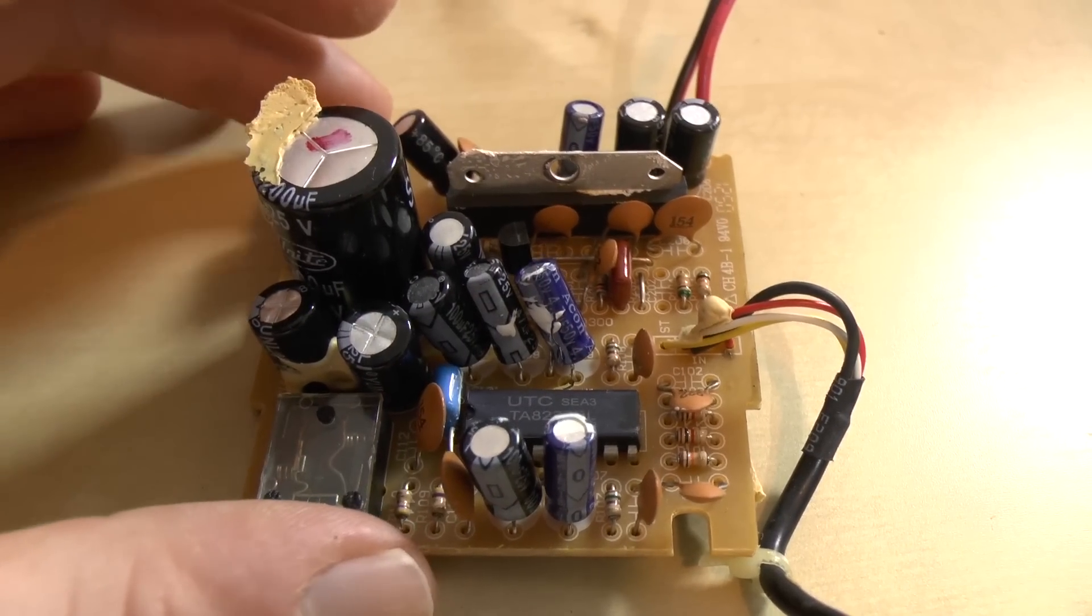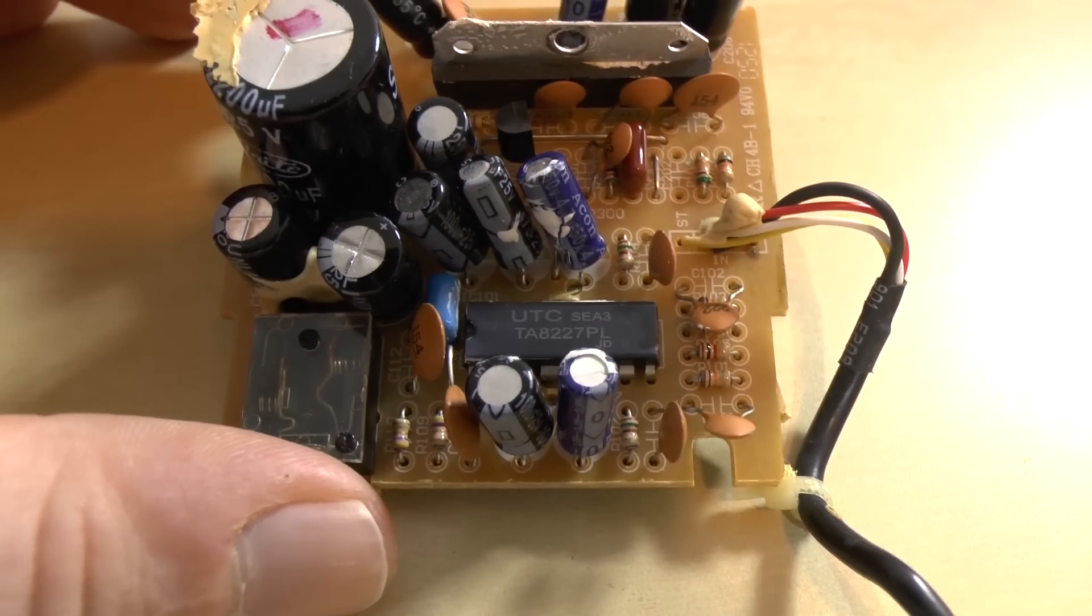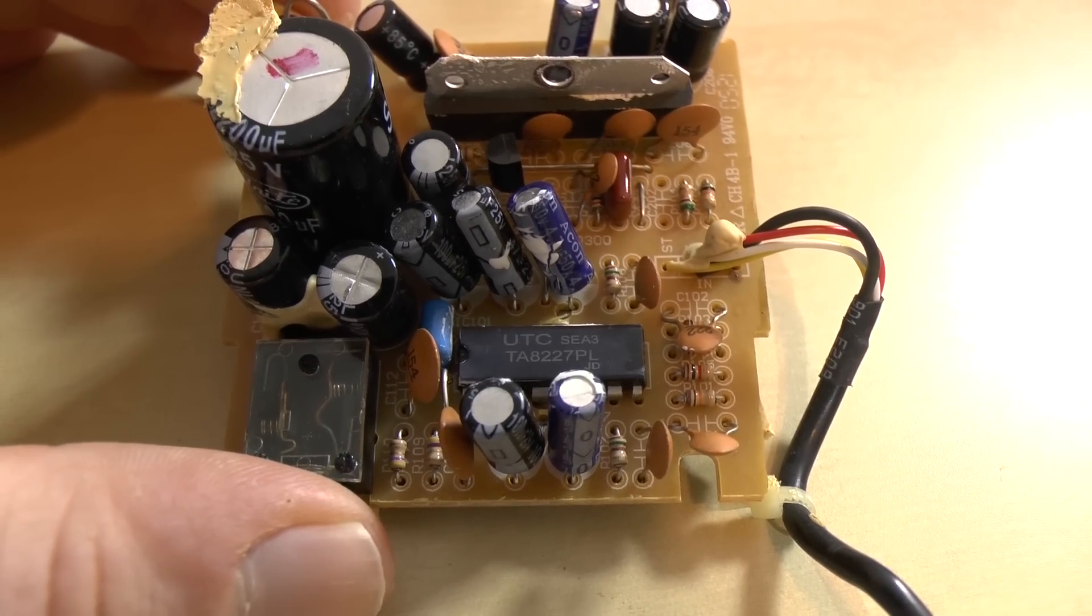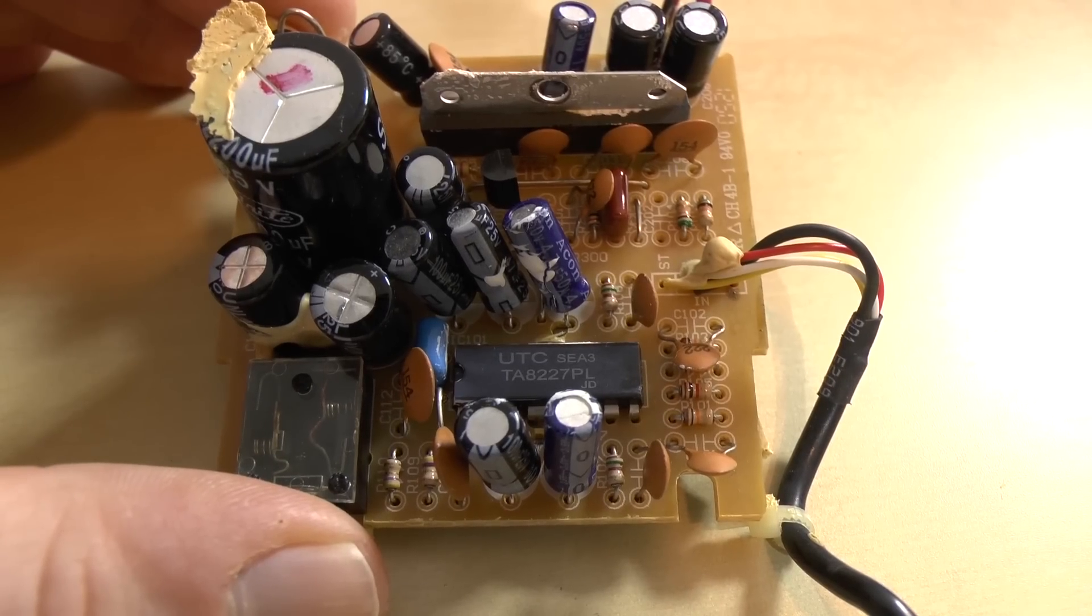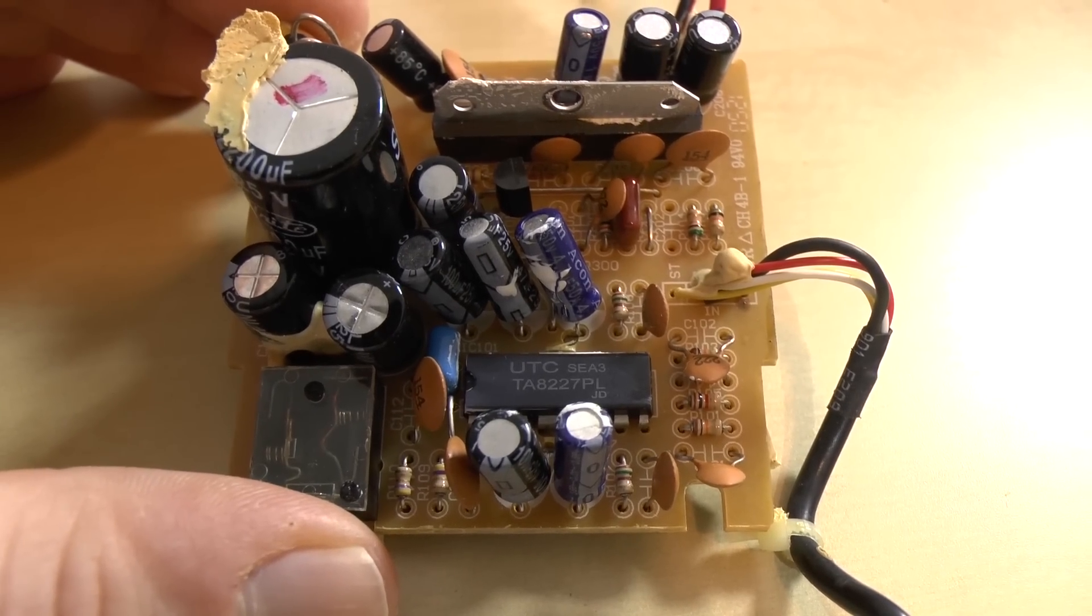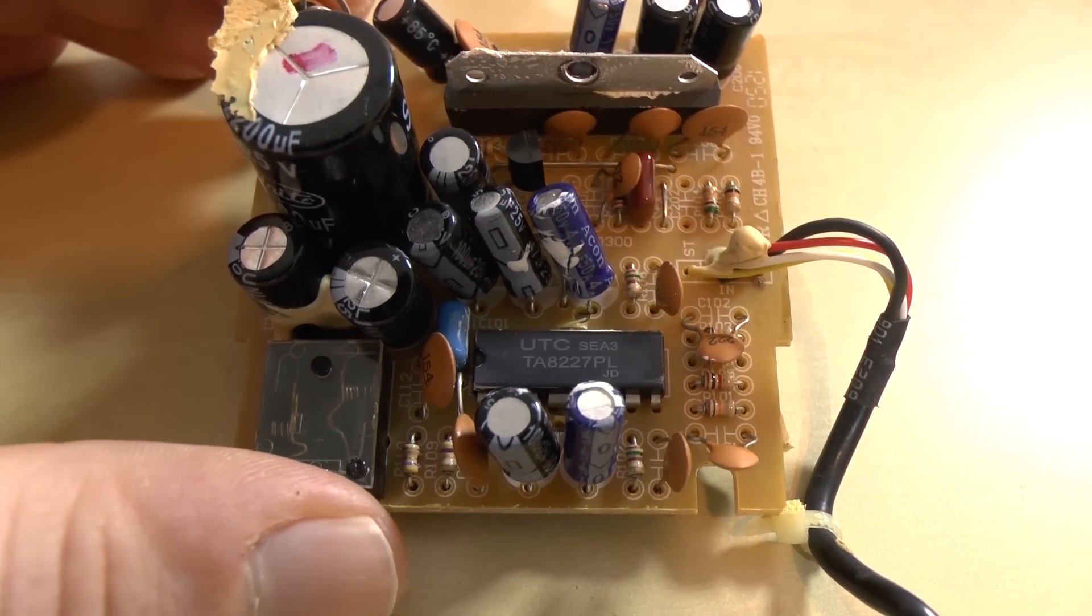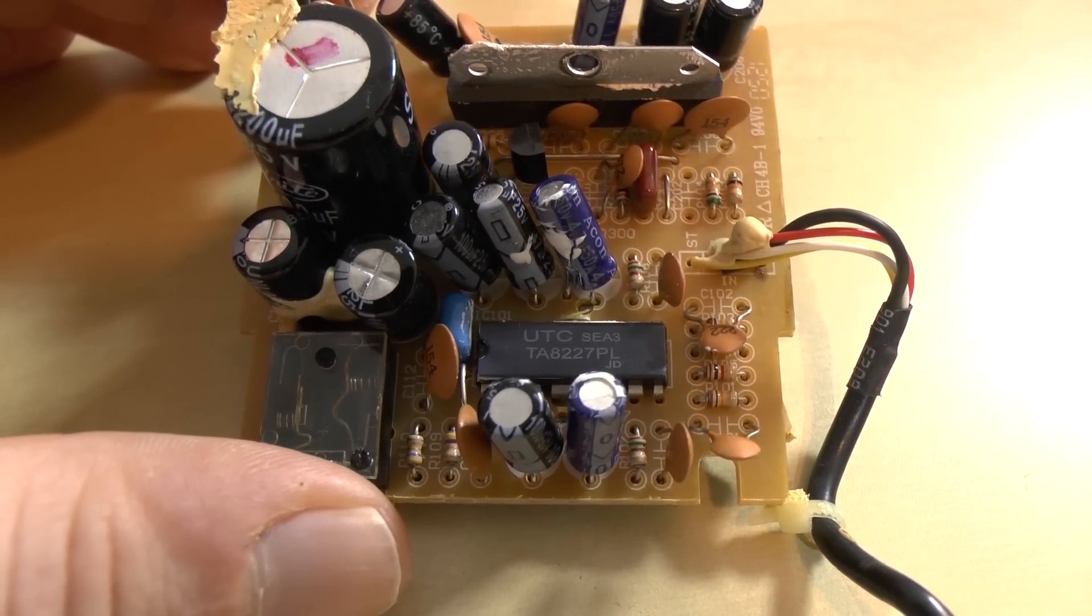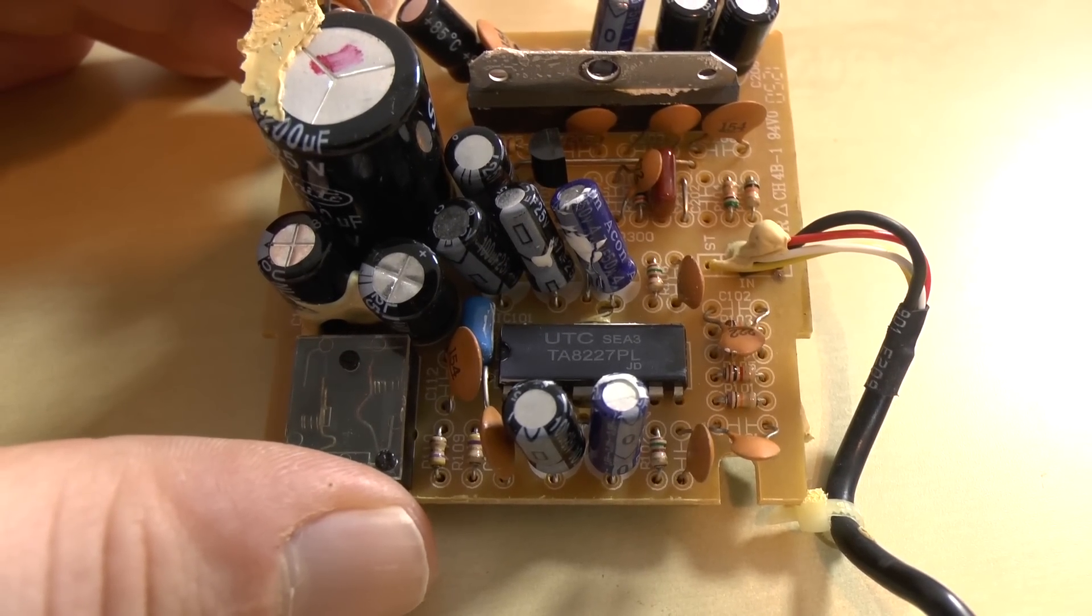This one had one that was actually soldered on. This one just screwed in place. This chip down here, this is a TA8227PL. This is running of voltages between 9 and 12 volts. And it delivers two and a half watts into a four ohm load stereo. So that is what would have driven your satellite speakers. Not a whole lot of power. Two and a half watts. And that is at 10 percent total harmonic distortion. So that would have sounded absolutely awful.